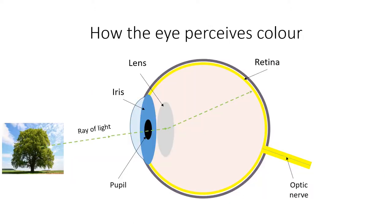This diagram shows a cross section of the human eye. Light from an object being viewed enters the eye through the iris. It is then focused onto the light sensitive lining of the eye called the retina.